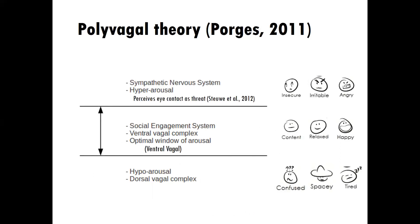Then we'll spend a little bit more time with Stephen Porges' polyvagal theory. I want you to have a solid understanding of the ventral vagal complex of the social engagement system and what's happening when you're able to join with someone relationally. We'll also look at what happens when the sympathetic nervous system is activated and the hyper arousal that can often lead to other interpersonal effects, such as perceiving eye contact as threat. We'll also look at hypo arousal — that's the freeze response — and the dorsal vagal response, and how that can play out in the counseling room.